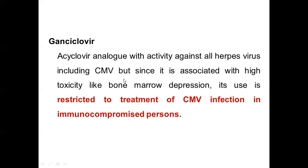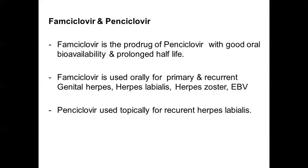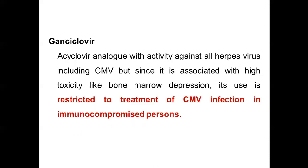Ganciclovir is an analog of acyclovir. It has activity against all the herpesviruses, including CMV. However, since it is associated with very high toxicity such as bone marrow depression, its use is restricted to only the treatment of CMV infection in immunocompromised persons. So ganciclovir is not frequently used for other herpes infections — it is only used for CMV infection, especially in immunocompromised persons, because of its high toxicity.